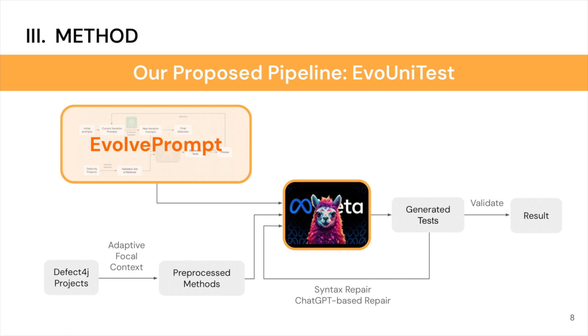then we will run the core ChatUnitTest pipeline using the EvoPrompt instead of the handcrafted prompt. We also make some additional modifications in LLM types because of the computational cost issue.